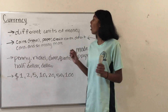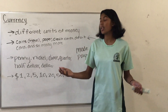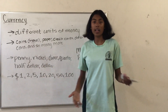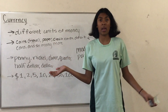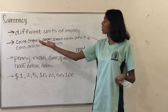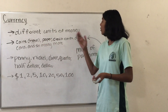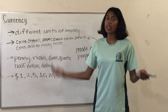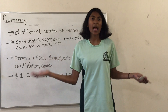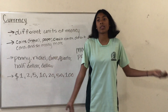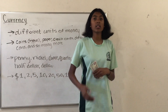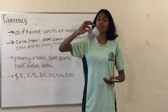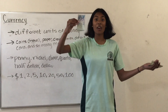Now let's move on to currency. Like we said before, currency is different units of money and it comes in many different ways — all ways that you can pay for something. We have coins, which are usually made of metal, paper, credit cards, debit cards, and so many more. Each country has its own currency. Some countries share the same currency as others, but they're mostly unique. Here are some examples — first we have the one ringgit from Malaysia.